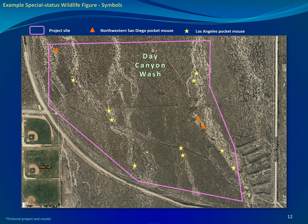Here is an example Special Status Wildlife figure. Small mammal trapping surveys were conducted and the results are shown here. Two sensitive species were trapped: the northwestern San Diego pocket mouse, depicted with orange triangles, and the Los Angeles pocket mouse, depicted with yellow stars.